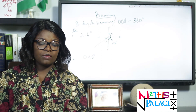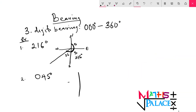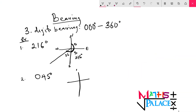For 045, remember we start from the north. We have the north, east, south, and west. Now start from the north and move 45 degrees. It is 045 degrees, meaning it is between the north and the east.